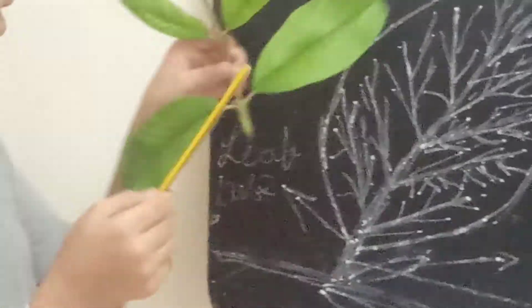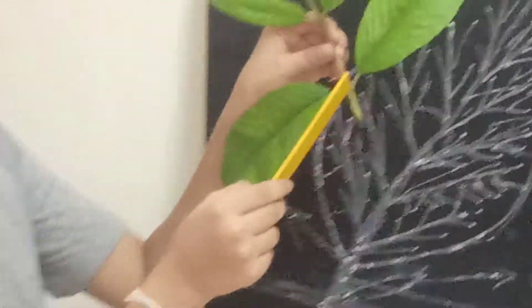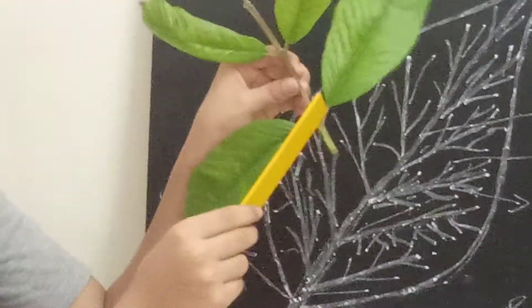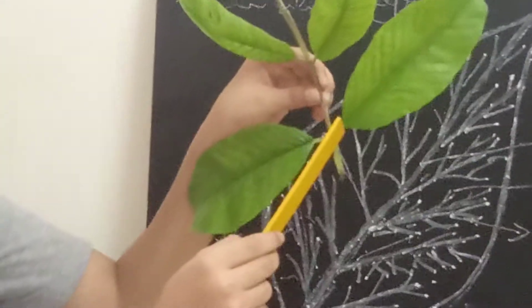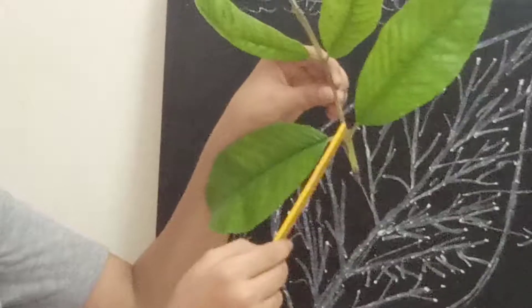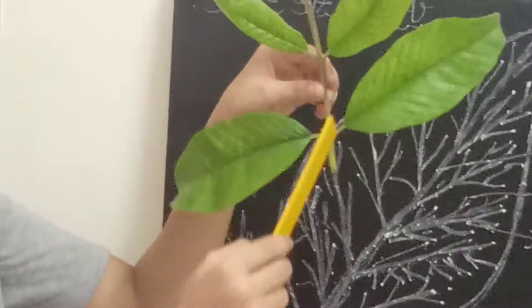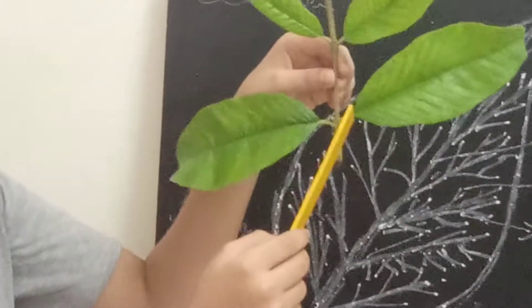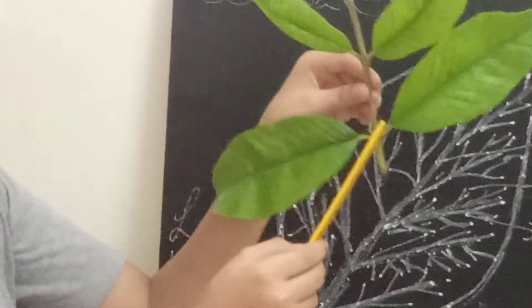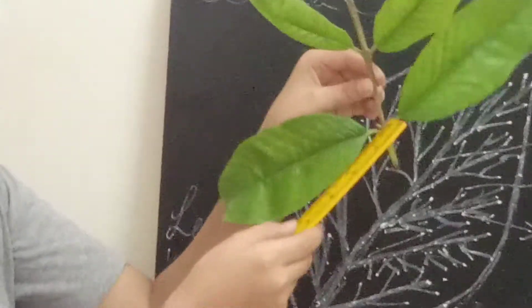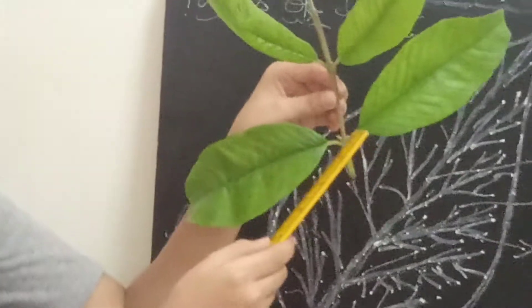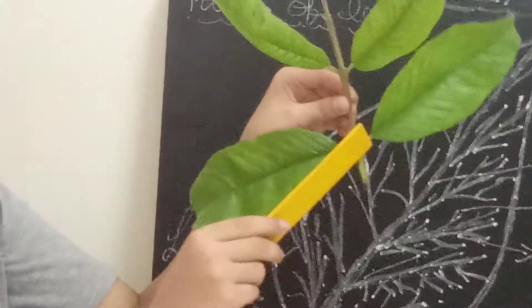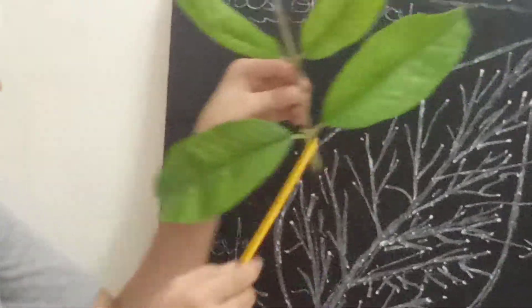Petiole. Petiole is the part of a leaf which attaches — which the leaf is attached with the stem or the branch. See here, this is called as petiole.